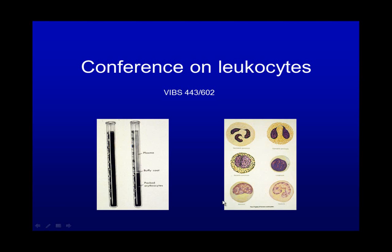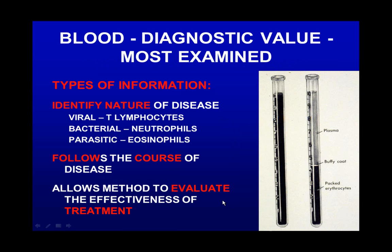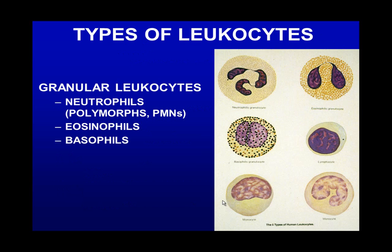This conference is on leukocytes — white blood cells in the body. Remember the diagnostic value of blood: you can tell information from blood evaluation, identify the nature of disease, determine if cells are present, follow the course of disease, and evaluate treatment — whether it's getting better or worse. There are different things you can learn from the blood.